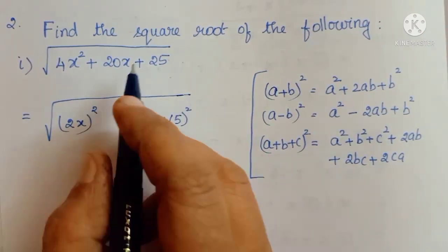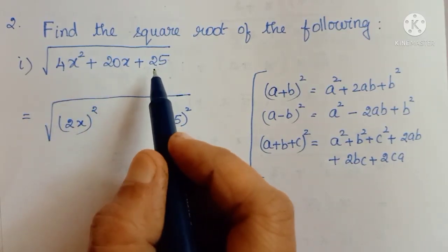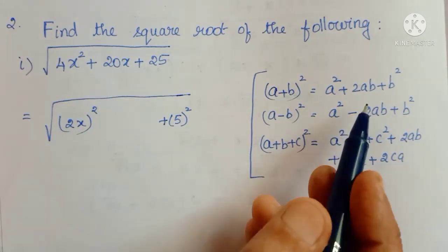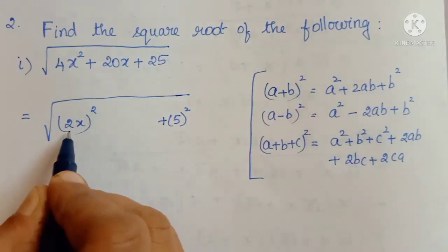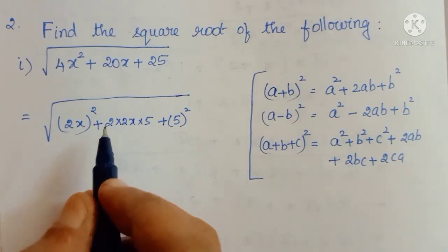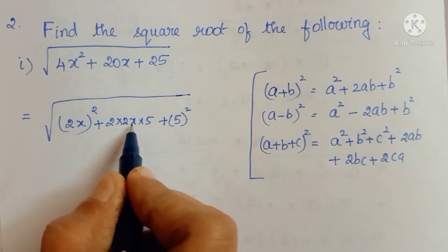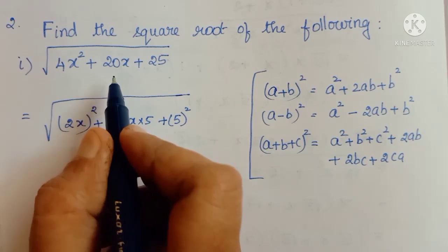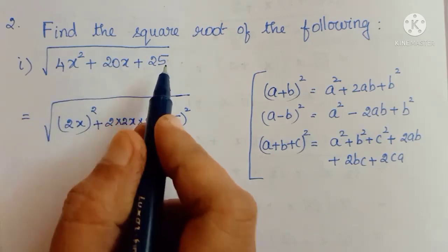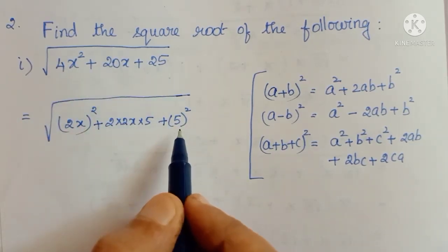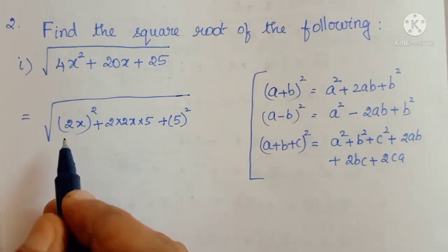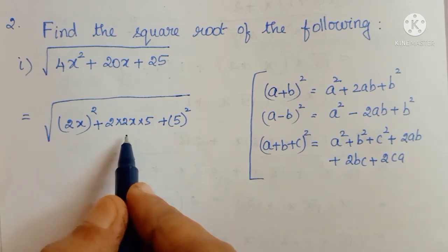The first term and the last term are perfect square numbers. Using that logic, we can easily change the second term. How to write 20x? It is the 2ab part of the formula, that is 2 into 2x into 5. Check: 2 times 2 is 4, times 5 is 20, and the variable x is there, so you get 20x. So first we take the first term and last term, write the two numbers in square form, and then write the center term as 2ab.